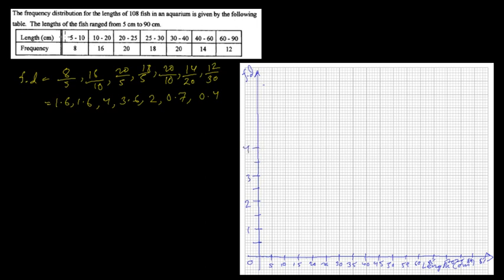The first bar is from 5 to 10 — since there is no gap, we don't do continuity correction. This is extremely important: the class boundary is the limit itself. So 5 and 10 are the class boundaries. The height is 1.6.